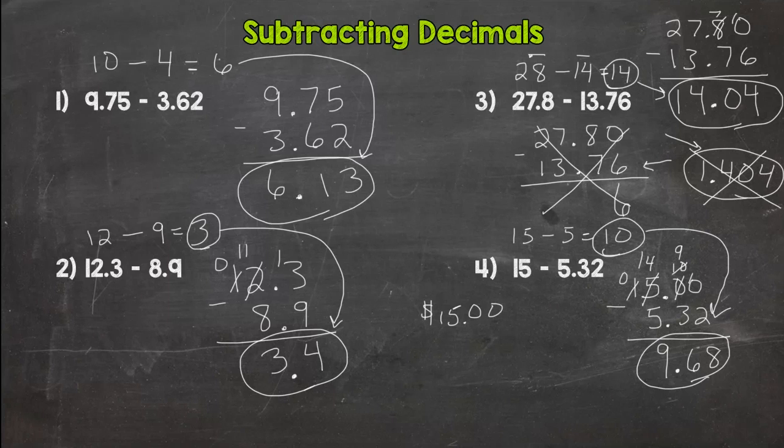So that is subtracting decimals for you and some example problems. Just remember: line up your decimal, use placeholder zeros if necessary, and correctly borrow and go through your subtraction process, and you got it down. I will see you over at the mastery check to see if you have it down on your own. Oh, and by the way, I dropped the link to the mastery check in the description. Thanks for watching.